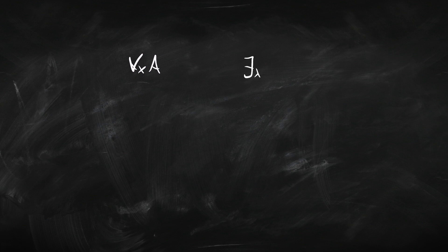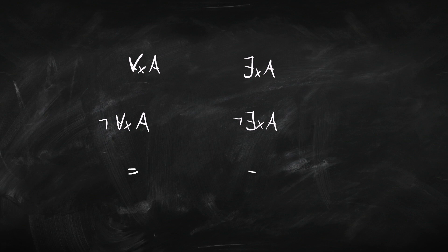For the quantifiers we're going to need four extra rules: one for dealing with the universal quantifier, one for dealing with the existential quantifier, one for dealing with the universal quantifier when it's negated, and one for dealing with the existential when it's negated. Let's start off with the simplest case first — the negated quantifiers.